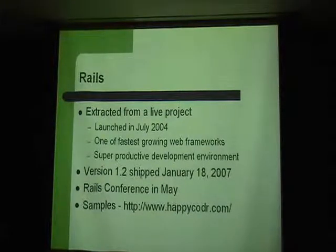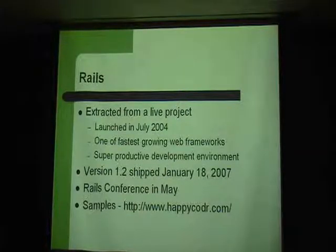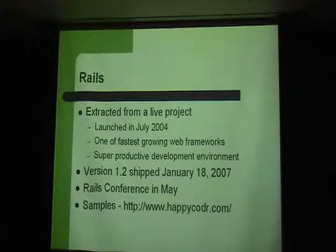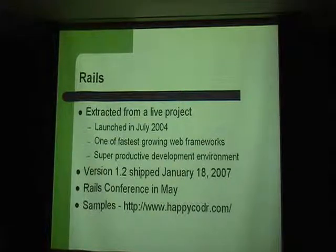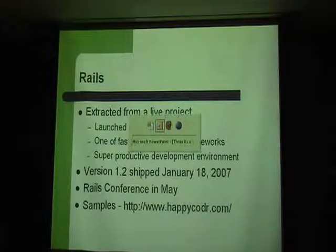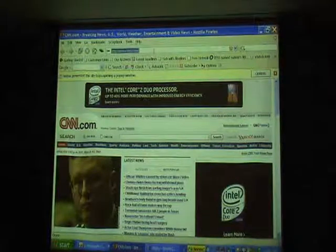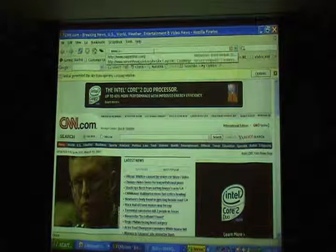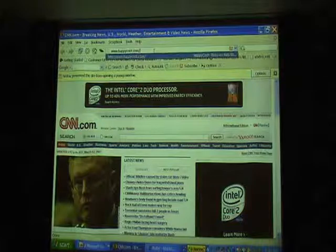Rails launched in July 2004, and version 1.2 shipped just this past year with lots of bug fixes and new stuff. It's a solid platform you can work with really reliably. The big thing about the 1.2 release is they've set it up so input and output is transparent whether the device is a Blackberry, a phone, or if the data is coming in from an XML feed or keyboard. There's a big Rails conference in May, sold out, with O'Reilly behind it.